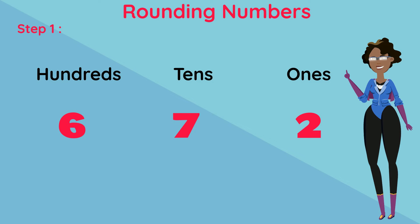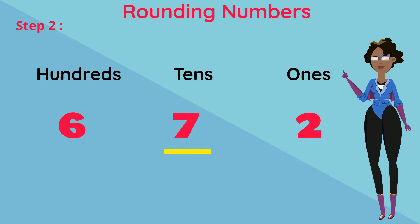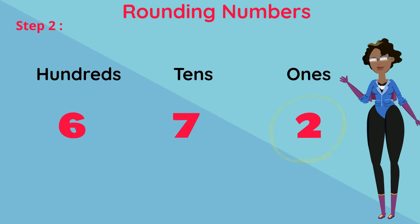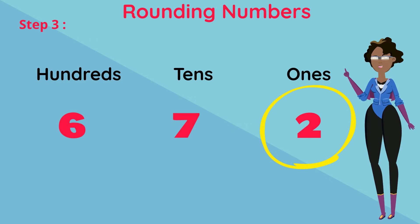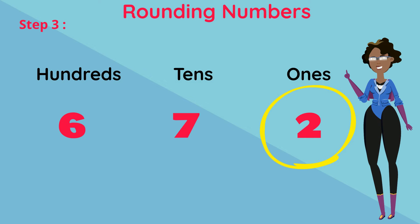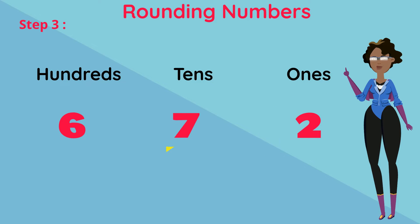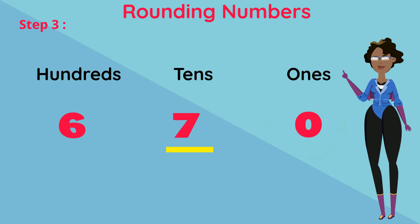Step 1: Underline the 10s digit. Step 2: Look at the 1s digit. Step 3: If the 1s digit is less than 5 — meaning 4, 3, 2, or 1 — then the 10s digit remains the same and 0 replaces the 1s digit.